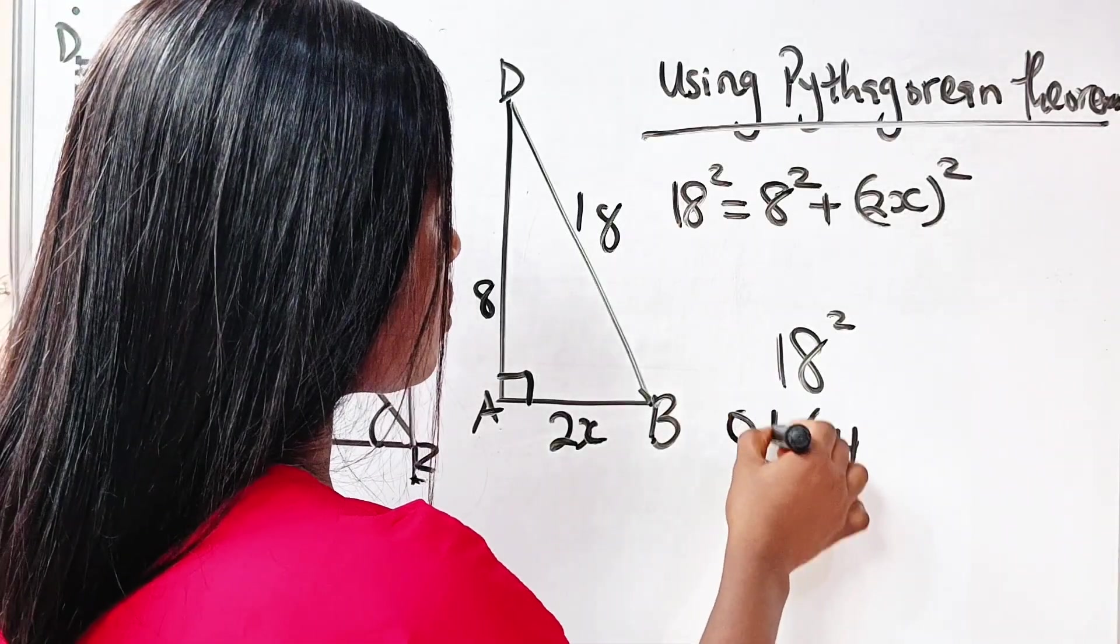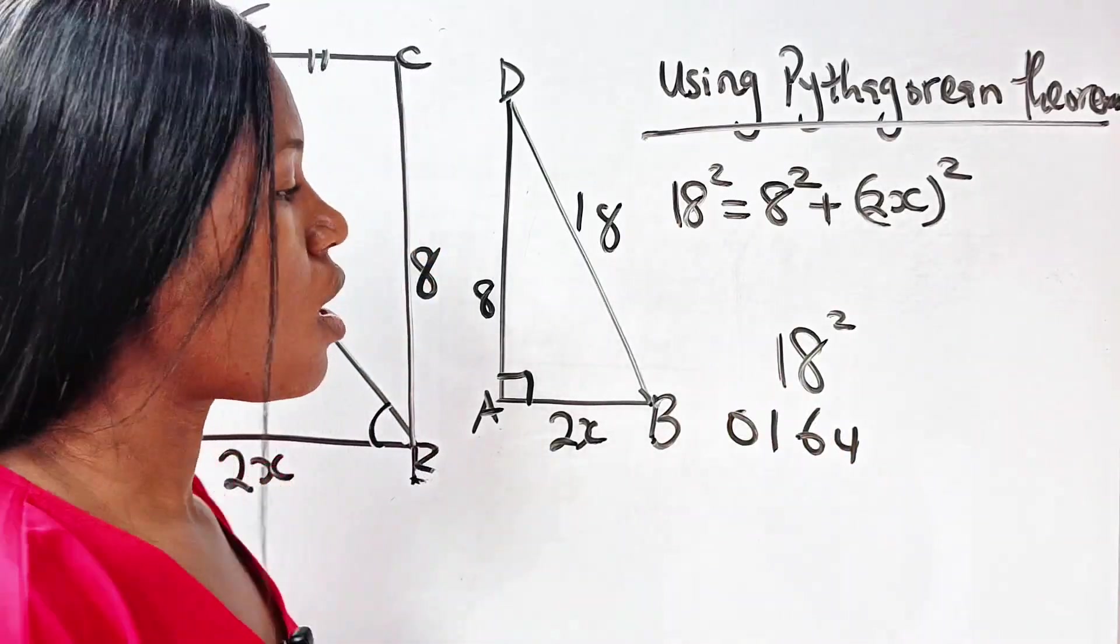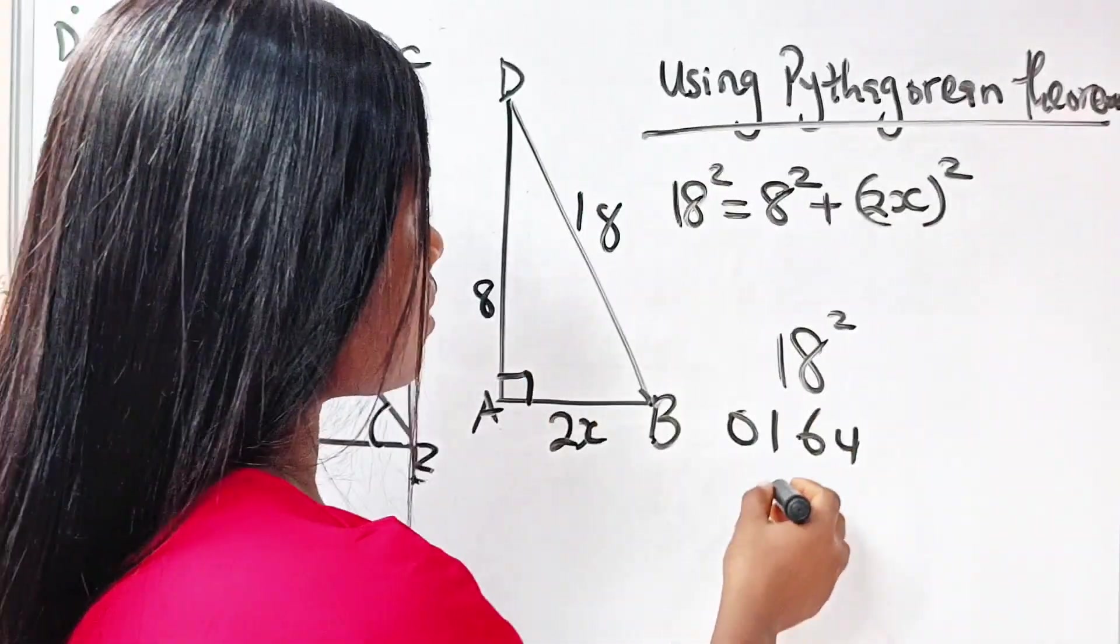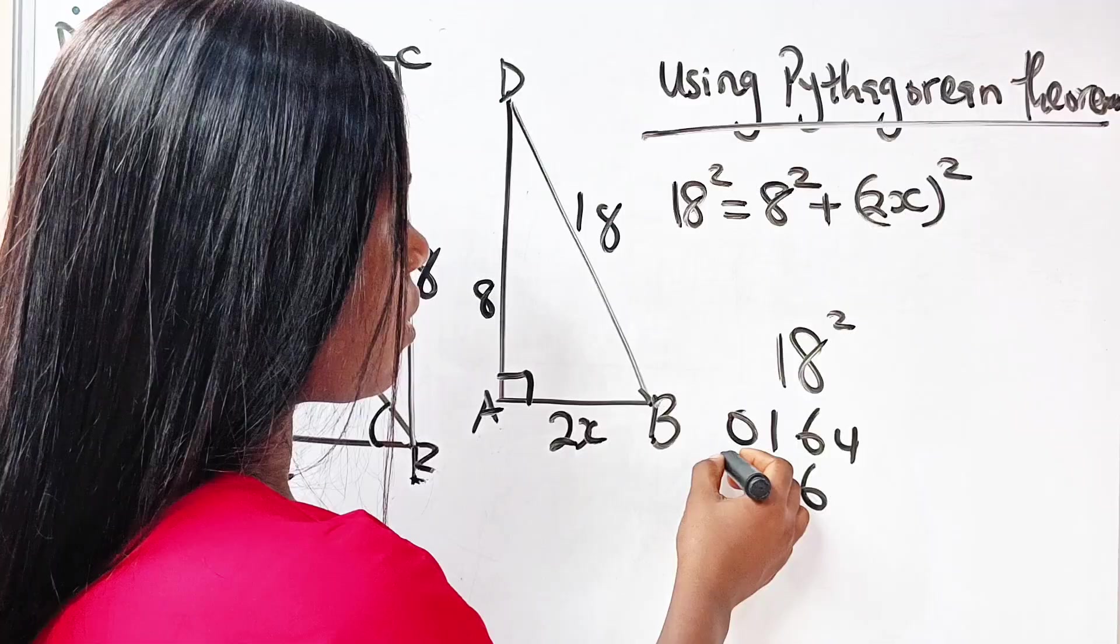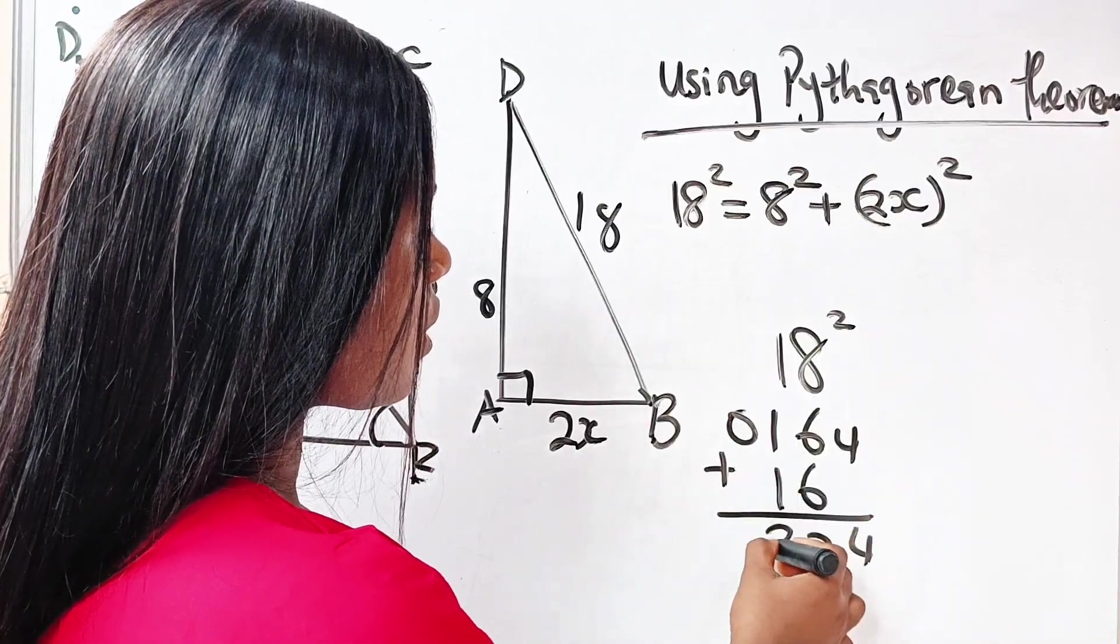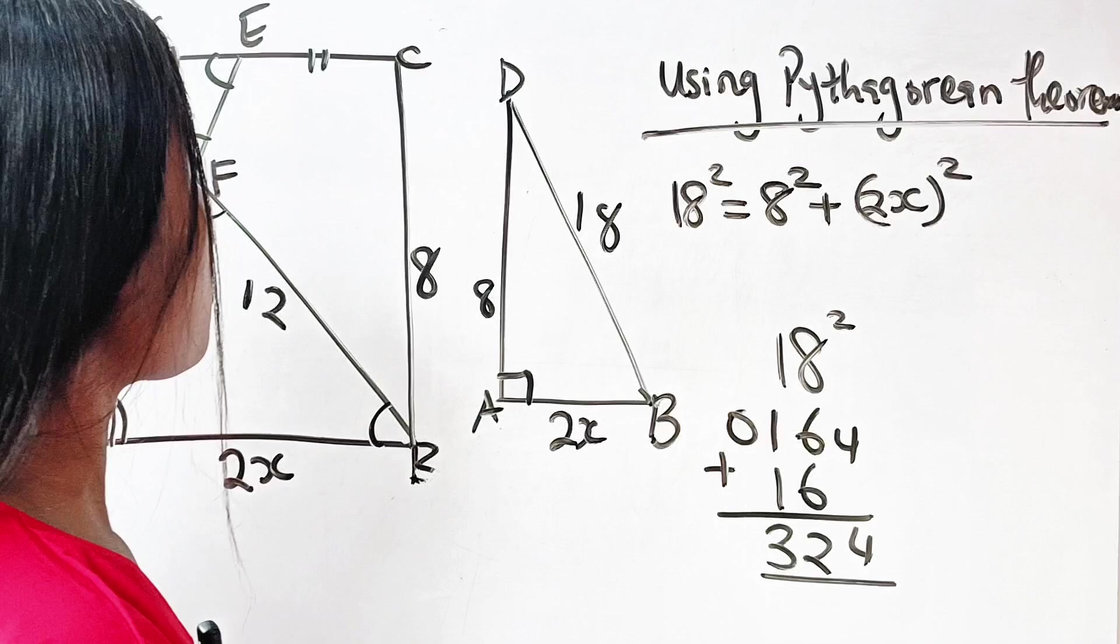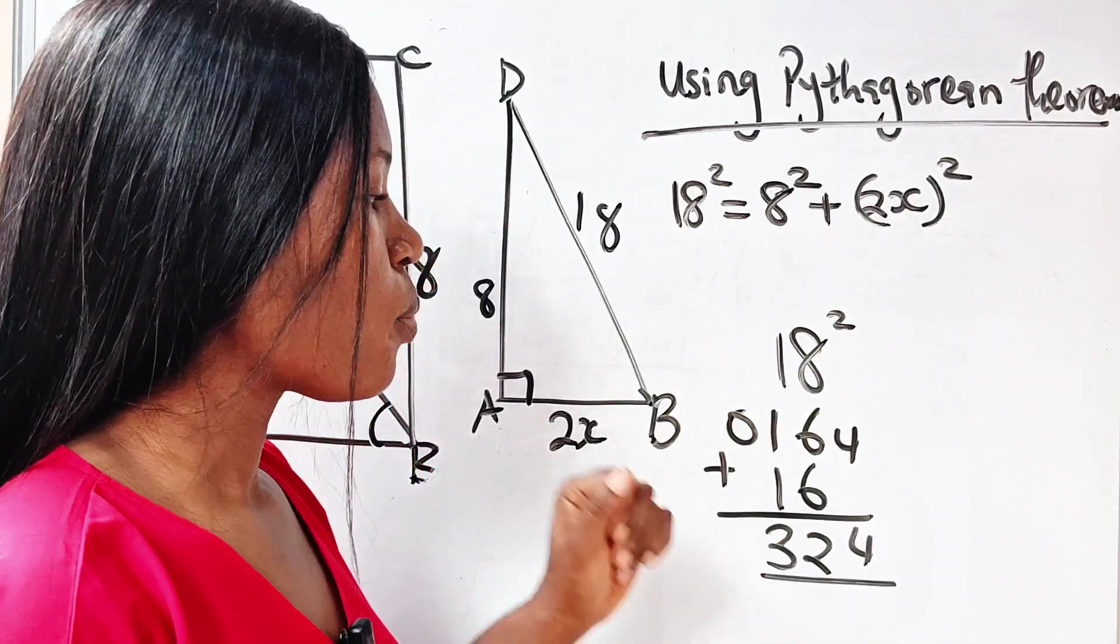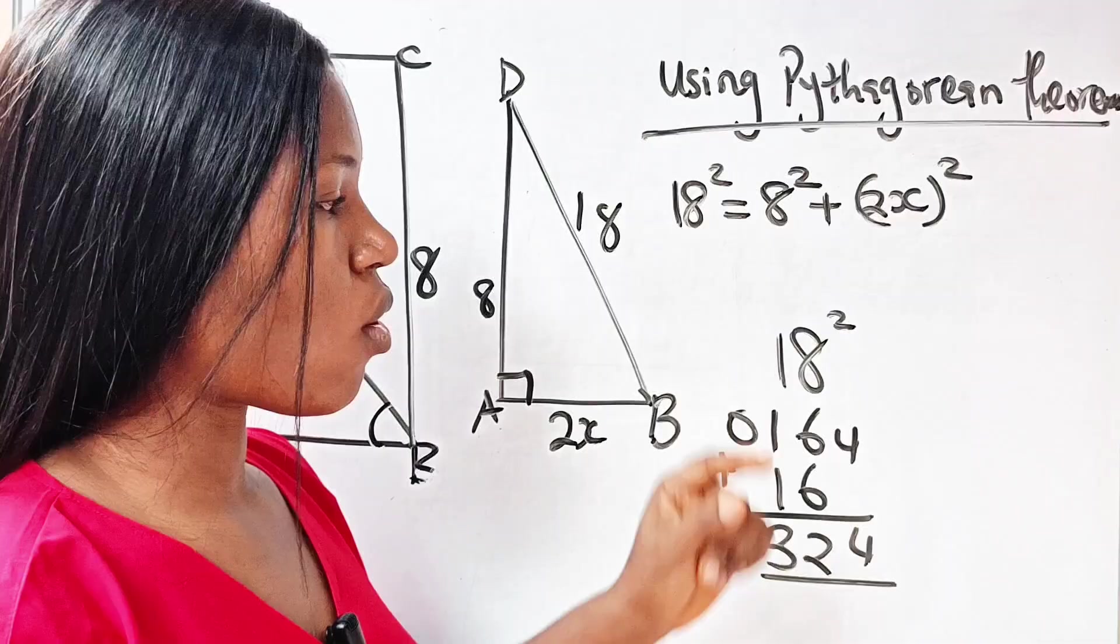So this is how it goes: 8 squared is 64, 1 squared is 1, which can be written as 01. So ensure that you write your numbers in twos. Now 1 times 8 is 8, 8 times 2 is 16. So always leave the first number and write from the second. So we add. So the answer is 324. That should be the square of 18.